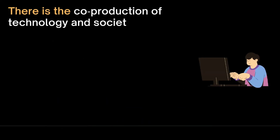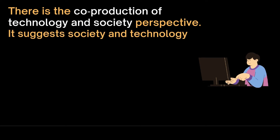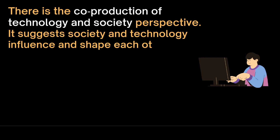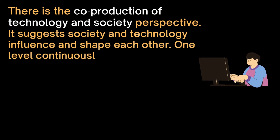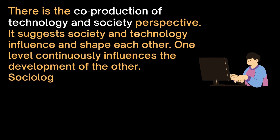There is also the co-production of technology and society perspective. It suggests that society and technology influence and shape each other — one level continuously influences the development of the other, and vice versa.